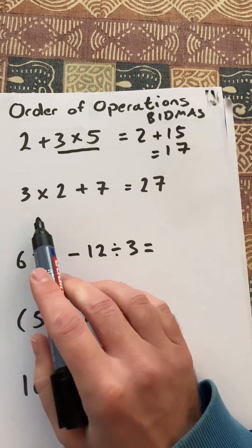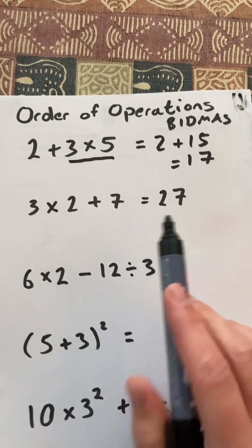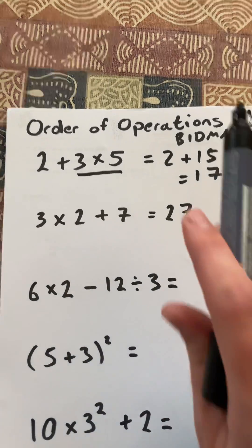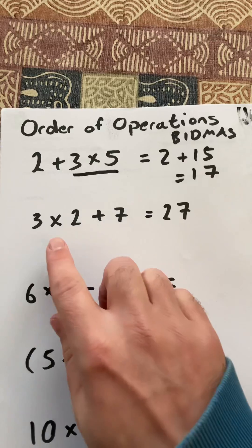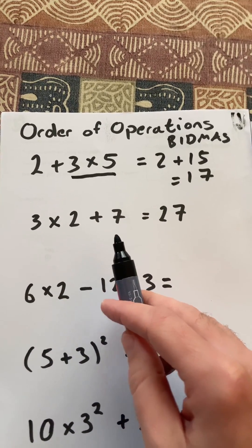So let's look at this one, where you'd need to put brackets in to make the statement correct, because we have 3 × 2 + 7 = 27. If I follow the laws of BIDMAS and I multiply that first, I'll get 6 plus 7, I'll end up with 13.